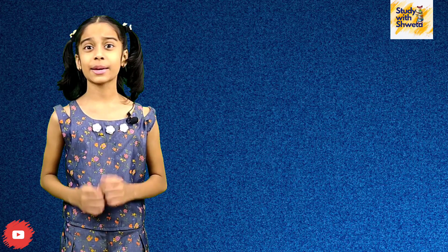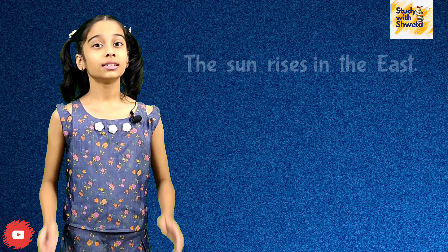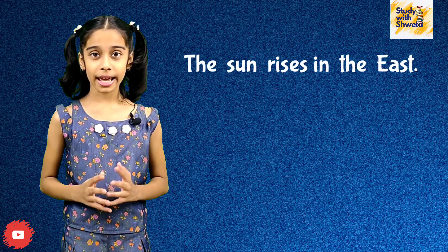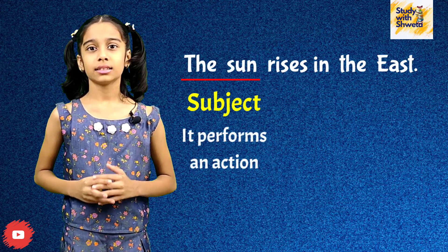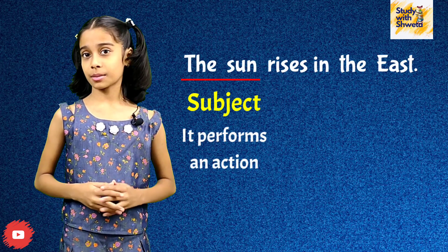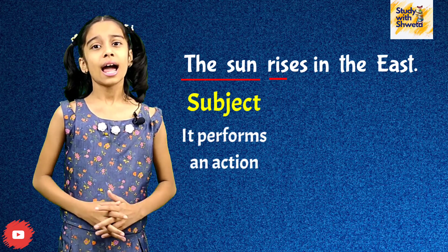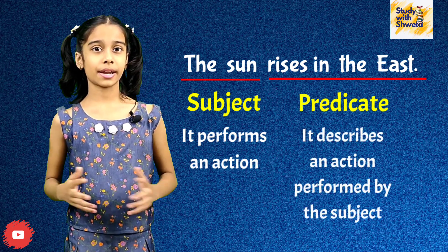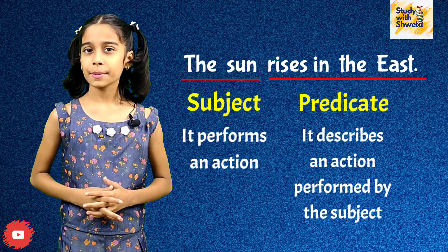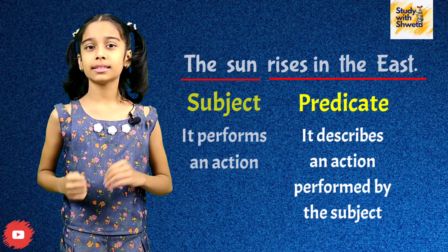Let's see some examples and find out subject and predicate. The sun rises in the east. In this sentence, 'the sun' is the subject, because it performs an action, and 'rises in the east' is the predicate, because it describes the action performed by the subject.